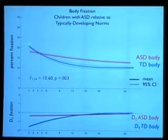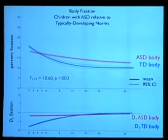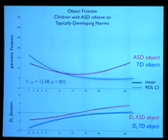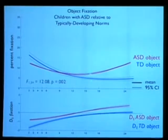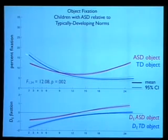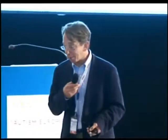The rate of looking at the body is dramatically dropping in typical children and not as dramatically in the children with autism. With object fixation, we obtained almost a separation between the two groups in the second year of life — the typical children are spending less and less time looking at objects, and the children with autism are looking more and more.